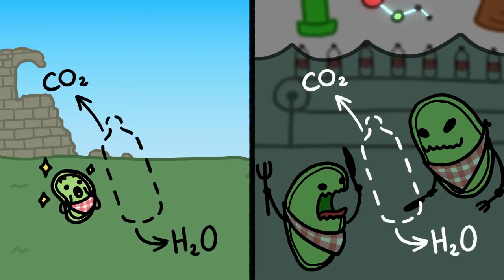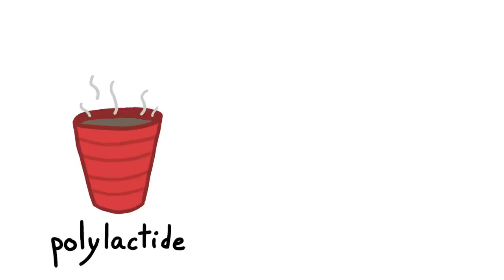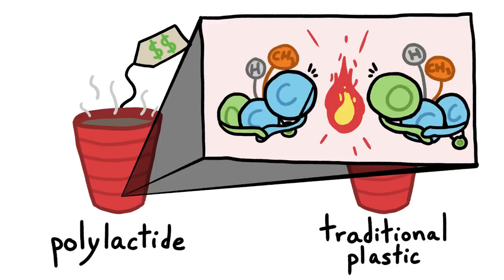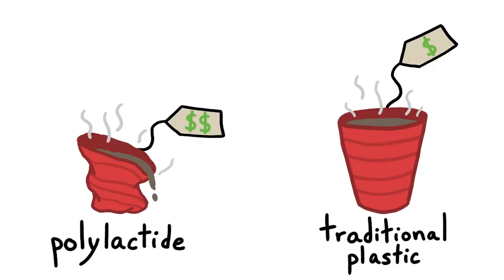But so far, there are some drawbacks. Polylactide, for example, is more expensive than traditional plastics. And the carbon-oxygen bonds that make it degradable also give it a fairly low softening point, making it not so practical for some uses.